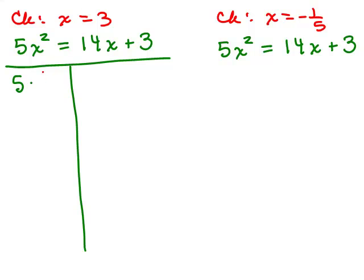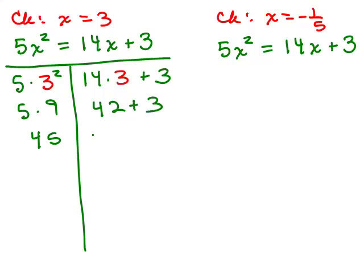Remember, order of operation, you have to do 5 times 9. You have to do the exponents first, and 5 times 9 is 45. On the other side, we have 14 times 3 plus 3, so we have 42 + 3, which is 45. So 3 checks.